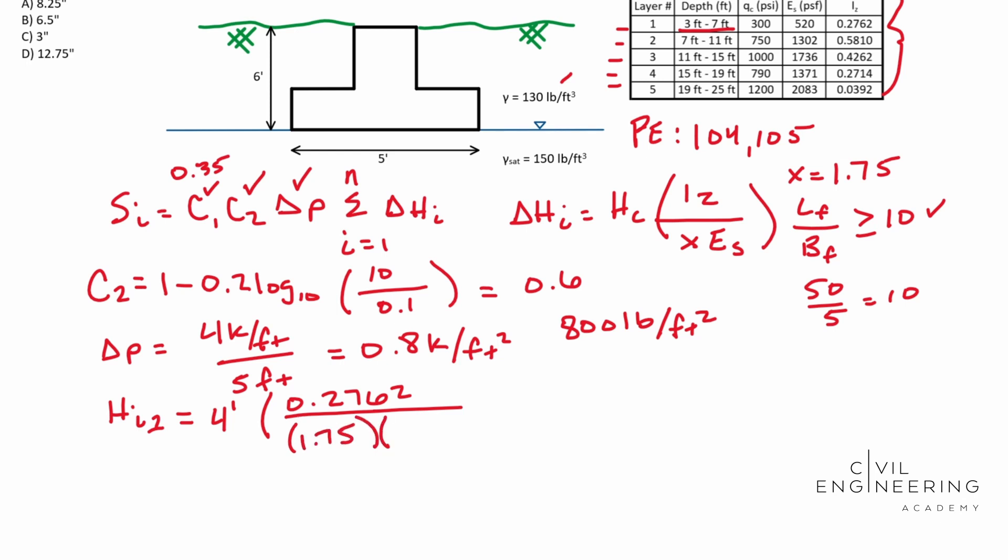So this is going to be 1.75. And then we're going to multiply that by our ES. And so our ES for the first one is going to be 520. And so we're going to solve that out and you end up with 0.0012.